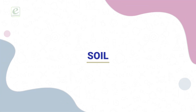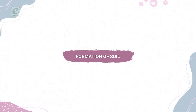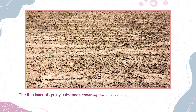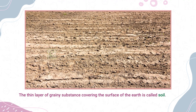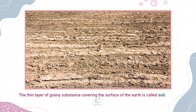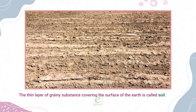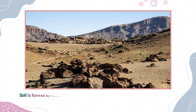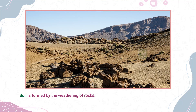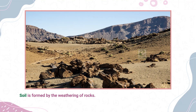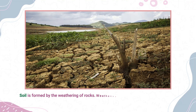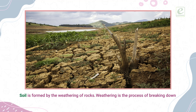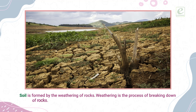Soil. Formation of Soil. The thin layer of grainy substance covering the surface of the earth is called soil. Soil is formed by the weathering of rocks. Weathering is the process of breaking down of rocks.